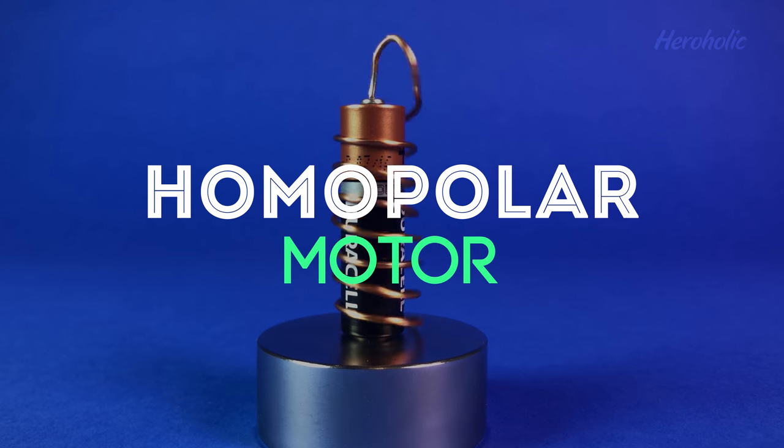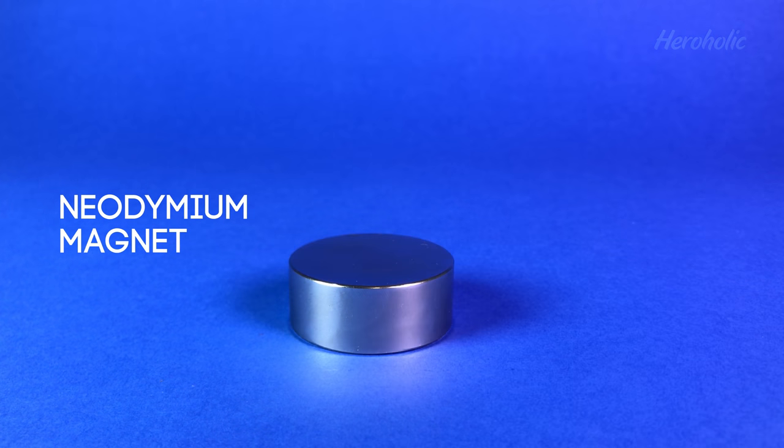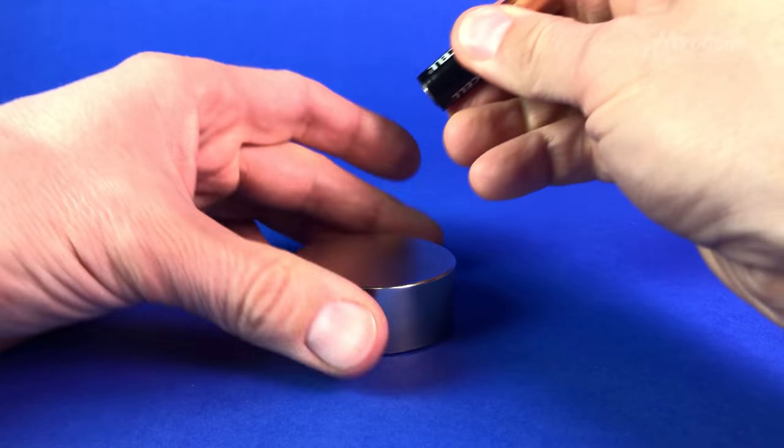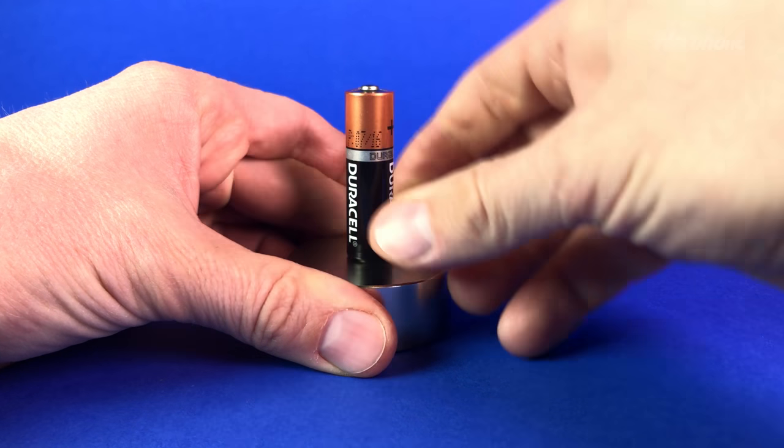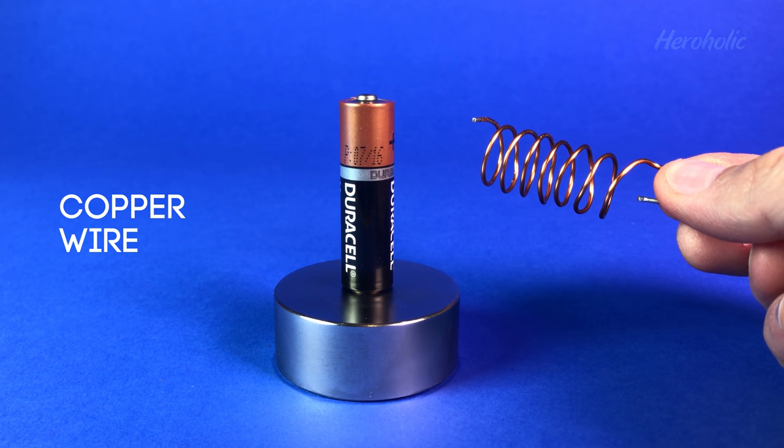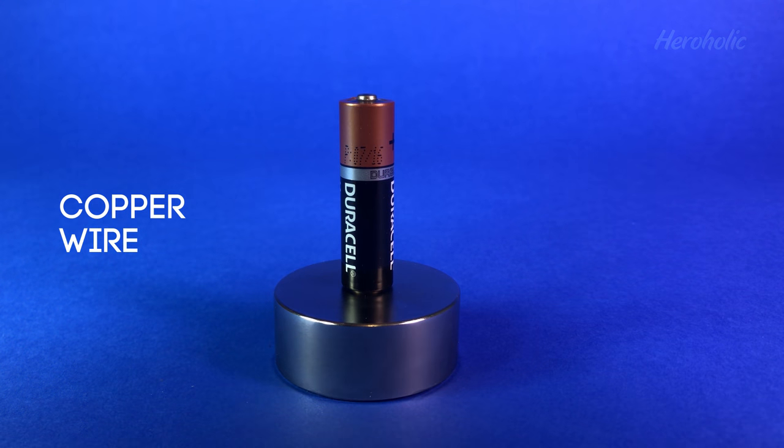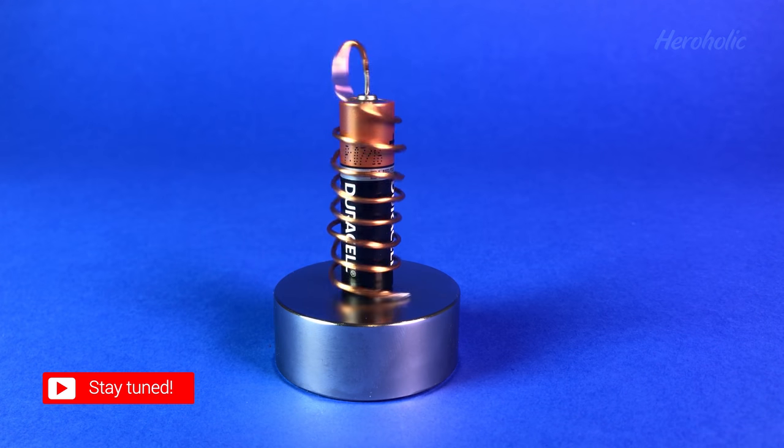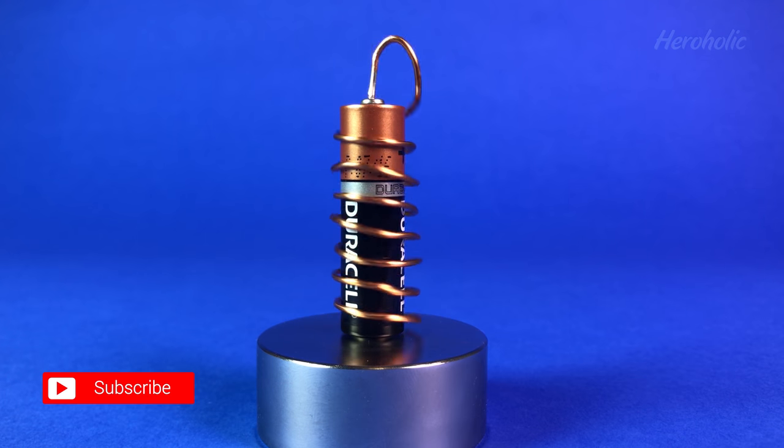Homopolar motor. You will need a battery, a magnet and some aluminum wire. Bend wire into a spiral and put it on the battery. The spiral must only slightly touch the magnet.